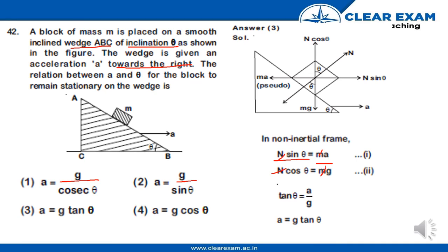Here m and m cancel, giving tan theta equals a upon g. Therefore, a equals g tan theta. This is the relation between a and theta for the block to remain stationary on the wedge. So option number 3 is the correct answer: a equals g tan theta.